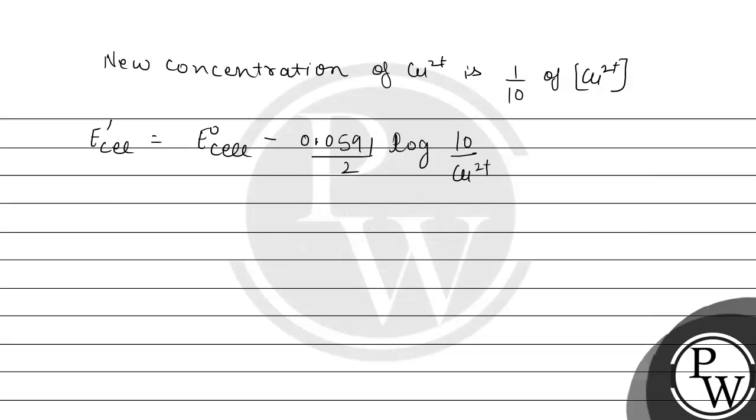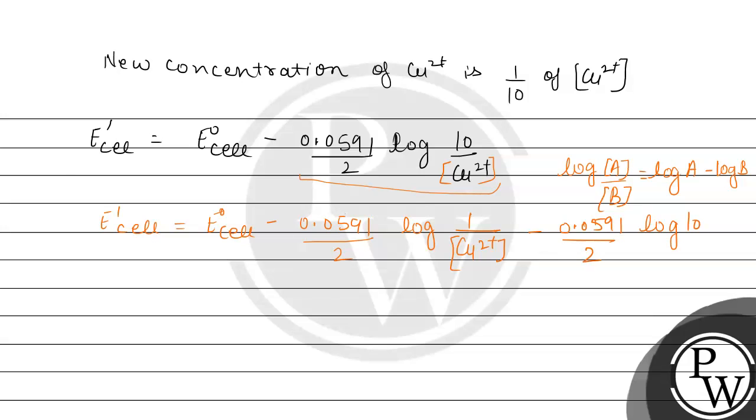We have to find out the change, but before that we will rearrange this equation. The formula for log of a divided by b is equal to log of a minus log of b. So for this particular equation we will rearrange this. It will be E cell minus 0.0591 divided by 2 log of 1 over 10 Cu²⁺ minus 0.0591 divided by 2 log of 10. These two equations are the same, just we have rearranged it.